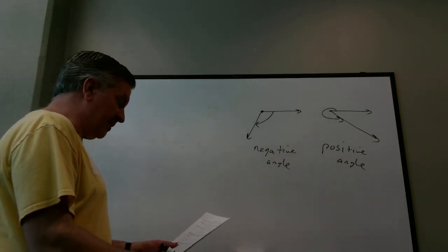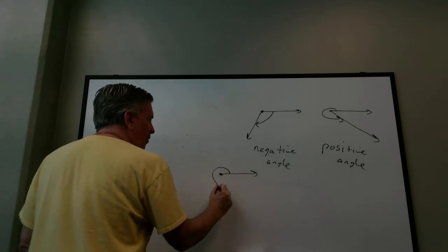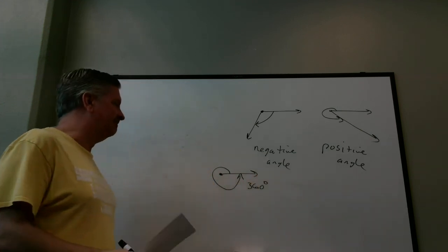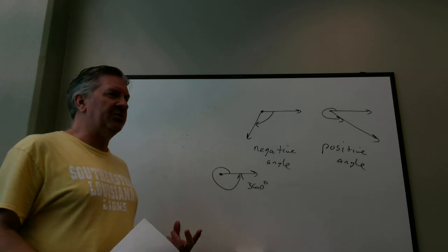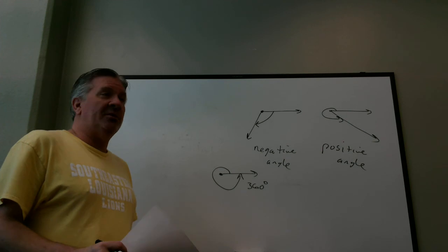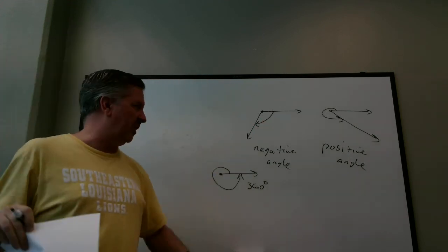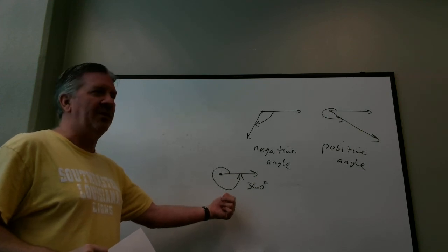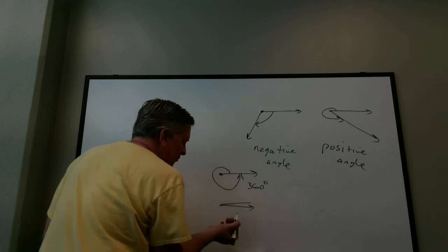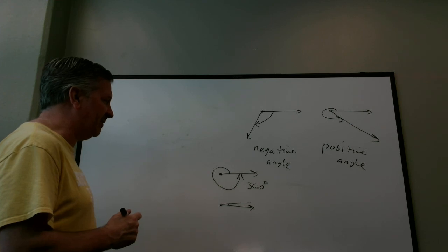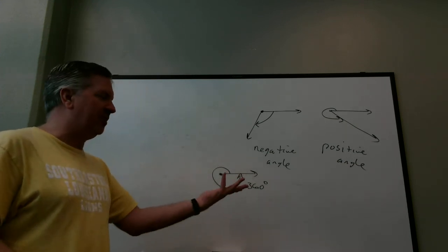A degree is a unit of measure for angles. One complete rotation is 360 degrees. Notice when you define something, you normally want to know how big one of them is — like showing a ruler to explain a foot. Here they define one degree in terms of how many go all the way around: 360. Why didn't they explain one degree directly? If you tried to draw one degree, it would be extremely tiny and hard to visualize. They figure college students can imagine that if the whole rotation is 360, one of them is very small.